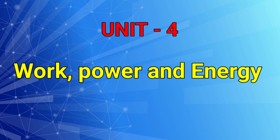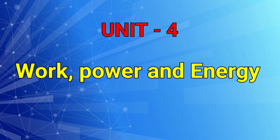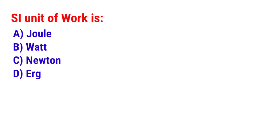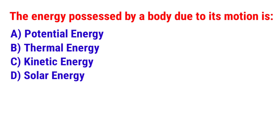Unit number 4: Work, Power and Energy. Next question: SI unit of work is? The answer is option A — Joule. Next question: The energy possessed by a body due to its motion is? The answer is option C — Kinetic energy.